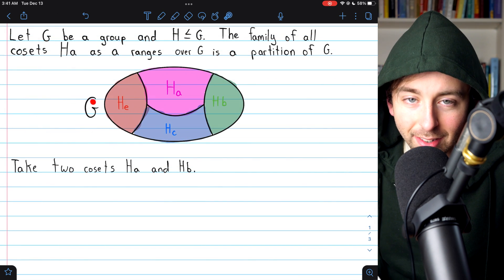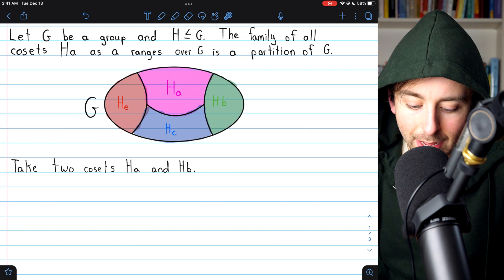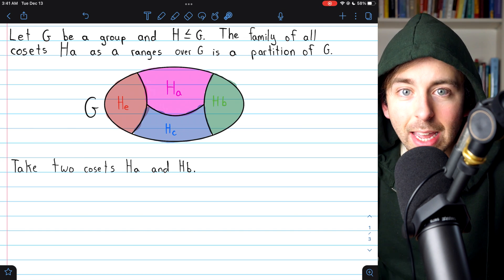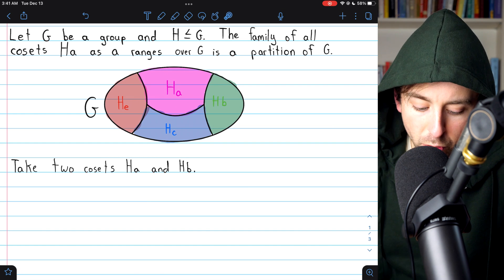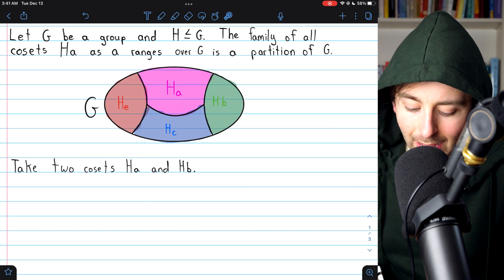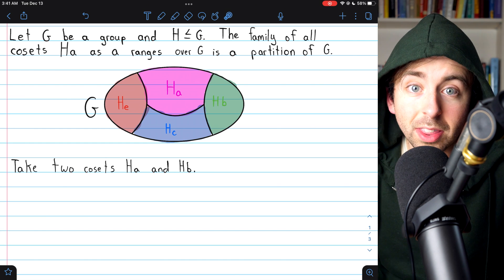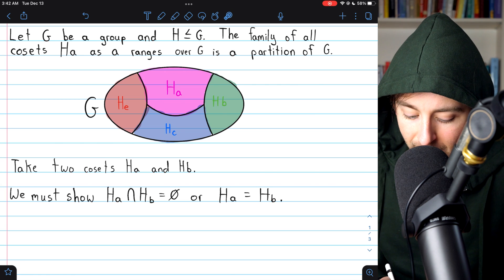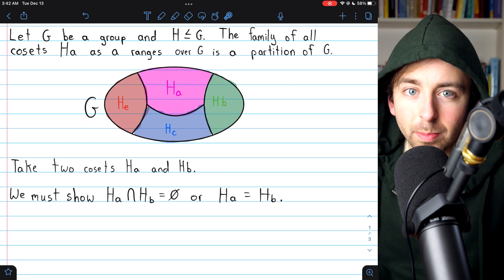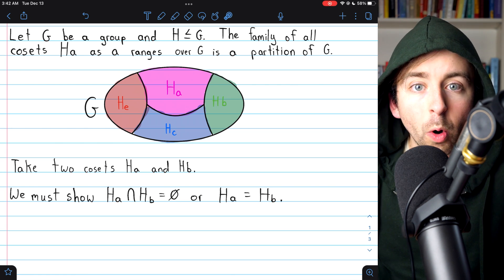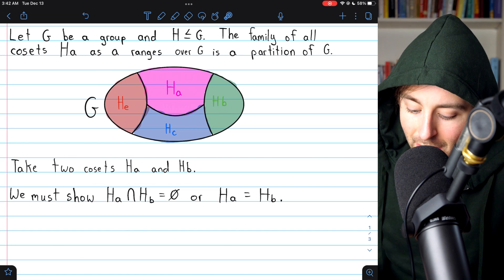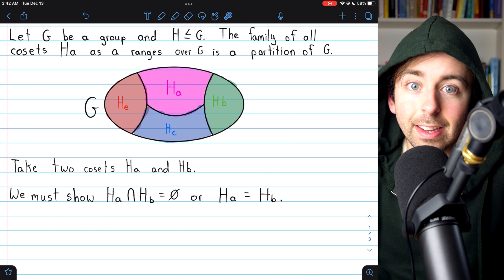To show that G is indeed partitioned by the cosets of the subgroup H, we need to begin by taking two arbitrary cosets of H, say Ha and Hb, and show that they are either disjoint or they are equal. If the cosets are disjoint, then we're done. So we can assume they have some overlap, and we want to prove that if they have an overlap, they must in fact be completely equal.